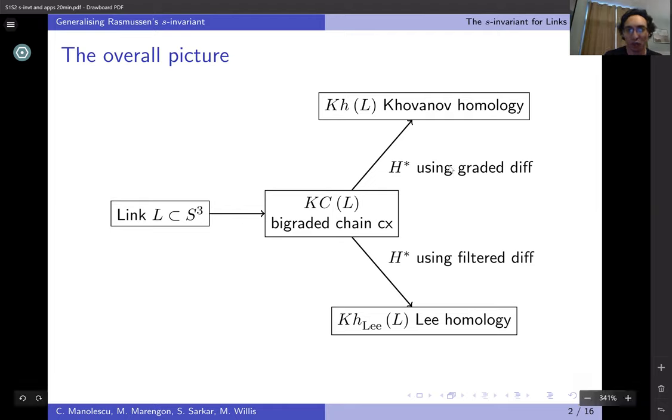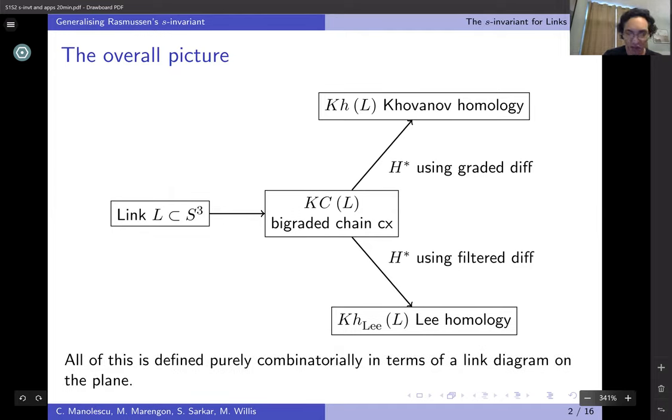You can take homology with respect to a graded differential and you get the Khovanov homology groups of the link, or you can take homology with respect to a filtered differential and you arrive at the Lee homology of the link. All these invariants are defined purely combinatorially in terms of a link diagram on the plane. Somebody hands you a link, you project it down to a plane, now you have a diagram, and from there there's a combinatorial setup to define all these things.